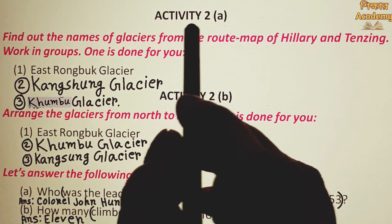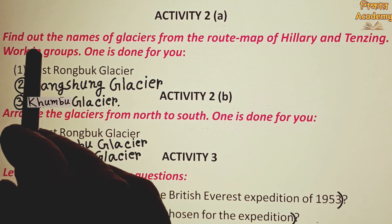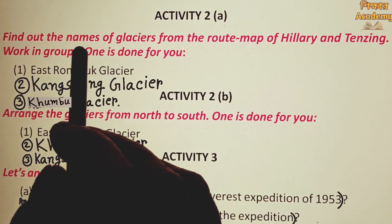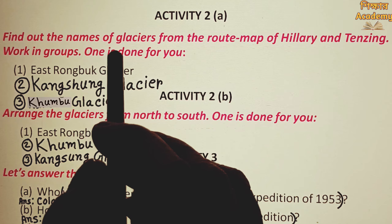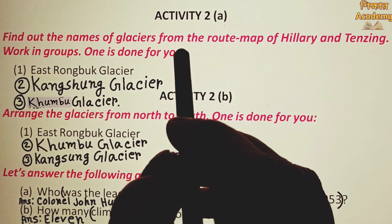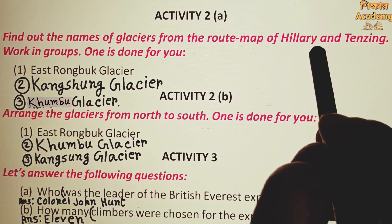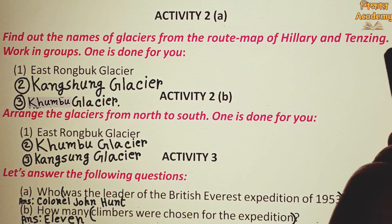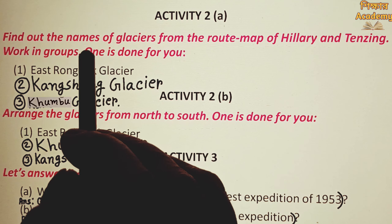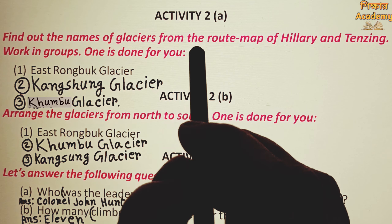Activity 2a. Find out the names of glaciers from the route map of Hillary and Tenzing.